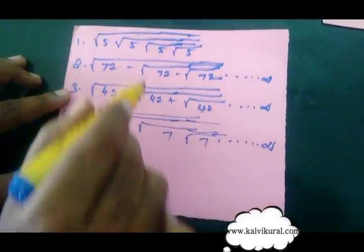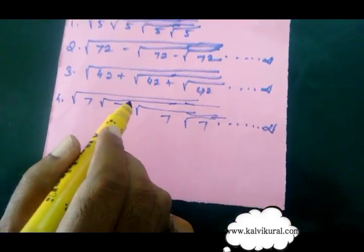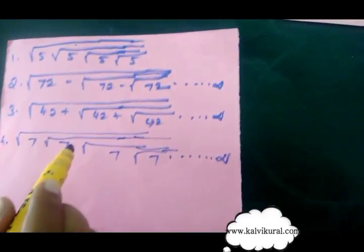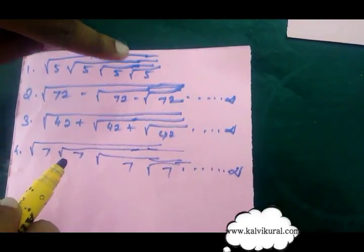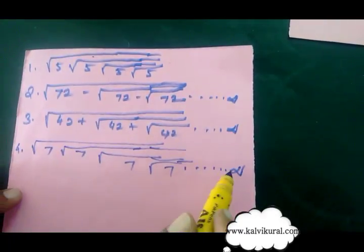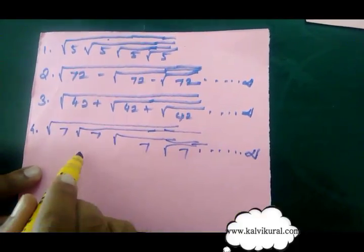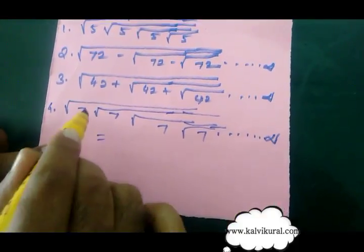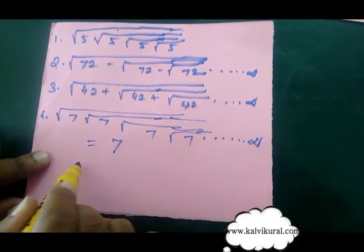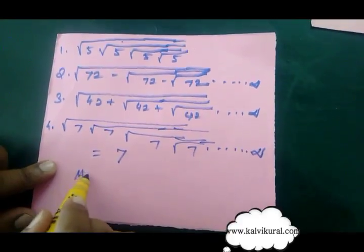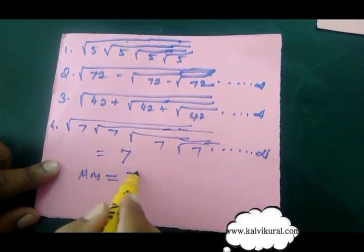If you have any problems, you will find the answer. 5 times, 4 times — you will find the answer. If you have infinity times, or any numbers, you will find the answer. The answer is equal to 7.